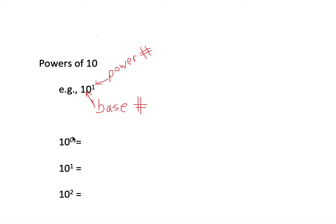Think of the superscript number as the number of zeros that you should see in your answer. So for 10 to the 0, we should see zero zeros — the answer is 1. For 10 to the 1, we should see one zero, so the answer is 10. For 10 to the 2, we should have two zeros, so the answer is 100.